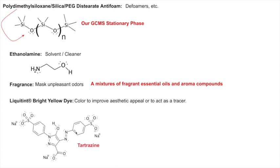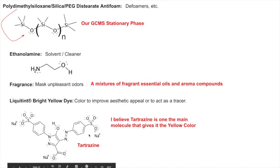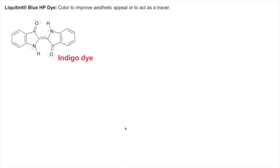The yellow dye is tartrazine, which has extensive aromaticity — an aromatic ring conjugated through nitrogens to another aromatic ring. This conjugation brings the HOMO and LUMO close enough together that the energy gap corresponds to yellow color. There's also a blue dye, likely indigo, which has a benzene ring with conjugation throughout that gives it its blue color.